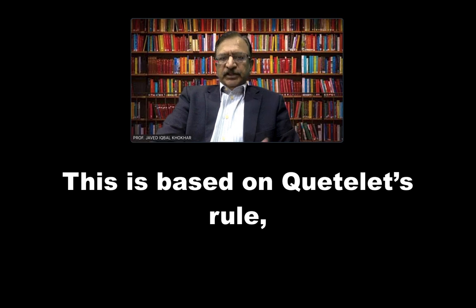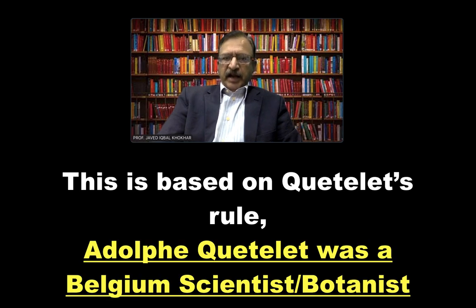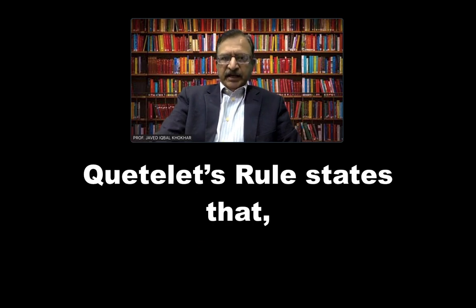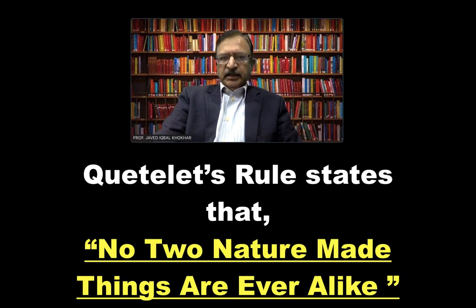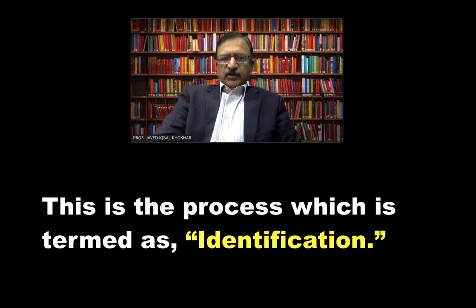The basis of identification is Quetlet's rule. Adolf Quetlet was a Belgian scientist and the rule states that no two nature-made things are ever alike. This is the foundation of the process which is termed as identification.